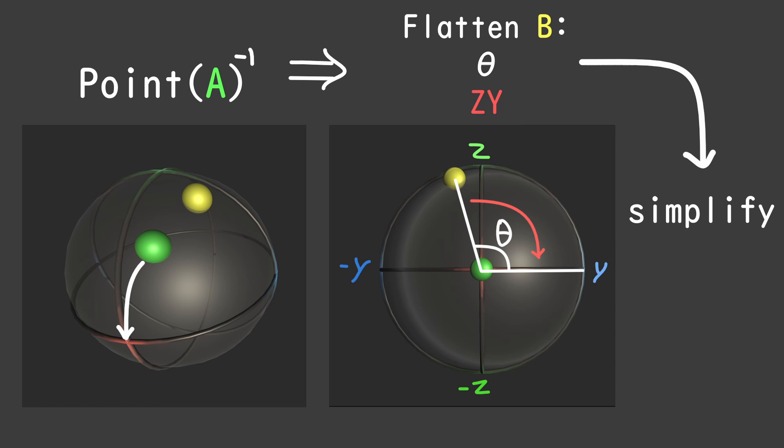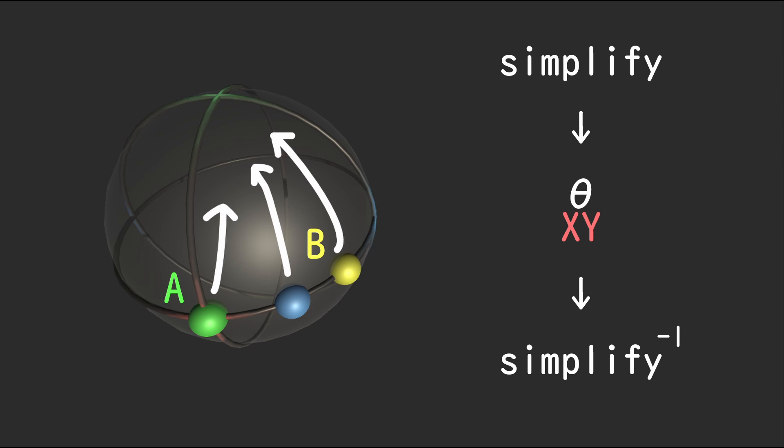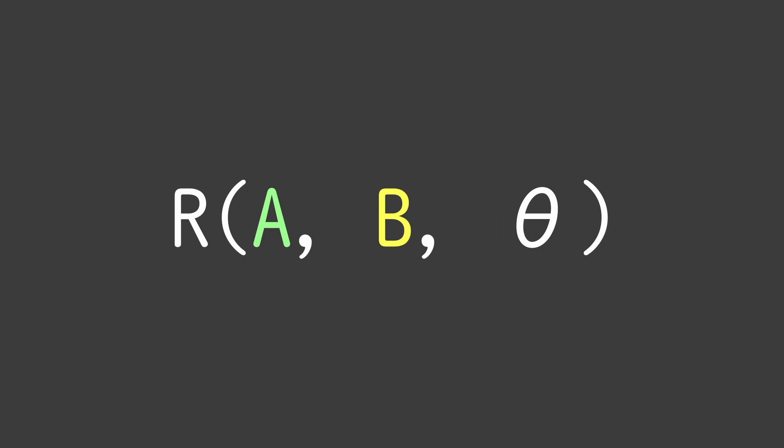We can combine our point rotation and flattening rotation to create our simplifying one. After this, we're left with the ideal case where we apply xy rotation by theta degrees. Last step is to perform the inverse of the simplifying rotation and we're done. With this, we created our function in 3D.